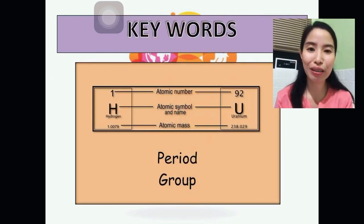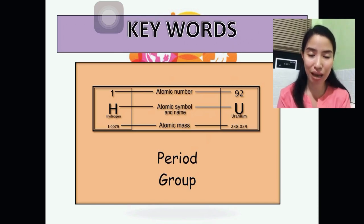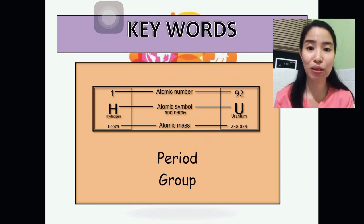Keywords. You have learned about atomic number, atomic name, and atomic symbol, atomic mass. Period, the seven rows in Periodic Table. Group, the 18 columns in Periodic Table.